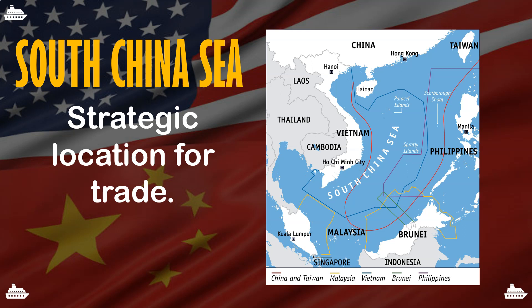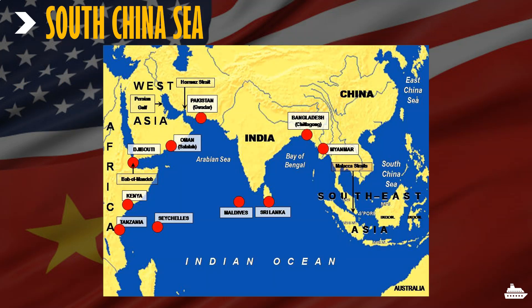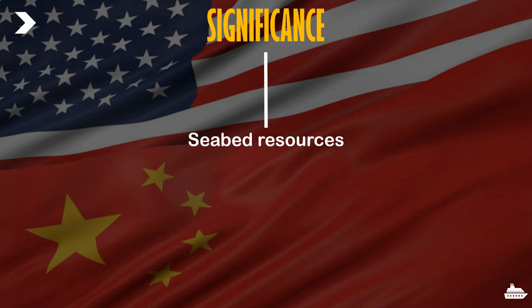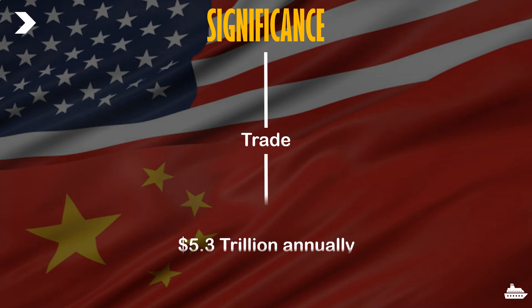It's a strategic location for trade. As you can see in this map, the South China Sea opens through the Malacca Strait to India and the Middle East if you go westward, and then you can go through the Hormuz Strait or the Suez Canal to enter the UK and Europe. Similarly, from this eastern hemisphere you can go through the Malacca Strait and into the South China Sea to the Pacific Ocean and trade with Western countries. The highlighted region here is the South China Sea, and its significance is not limited to trade alone — it's also rich in seabed resources such as oil and natural gas. Nearly 5.3 trillion dollars worth of trade passes through here annually.